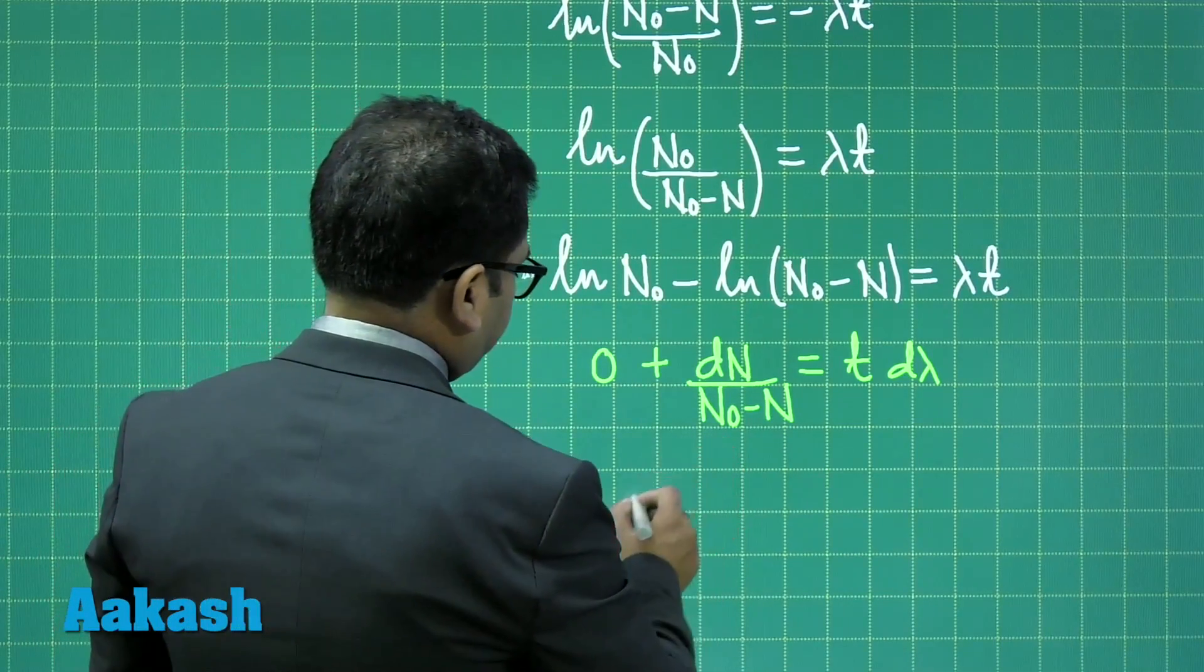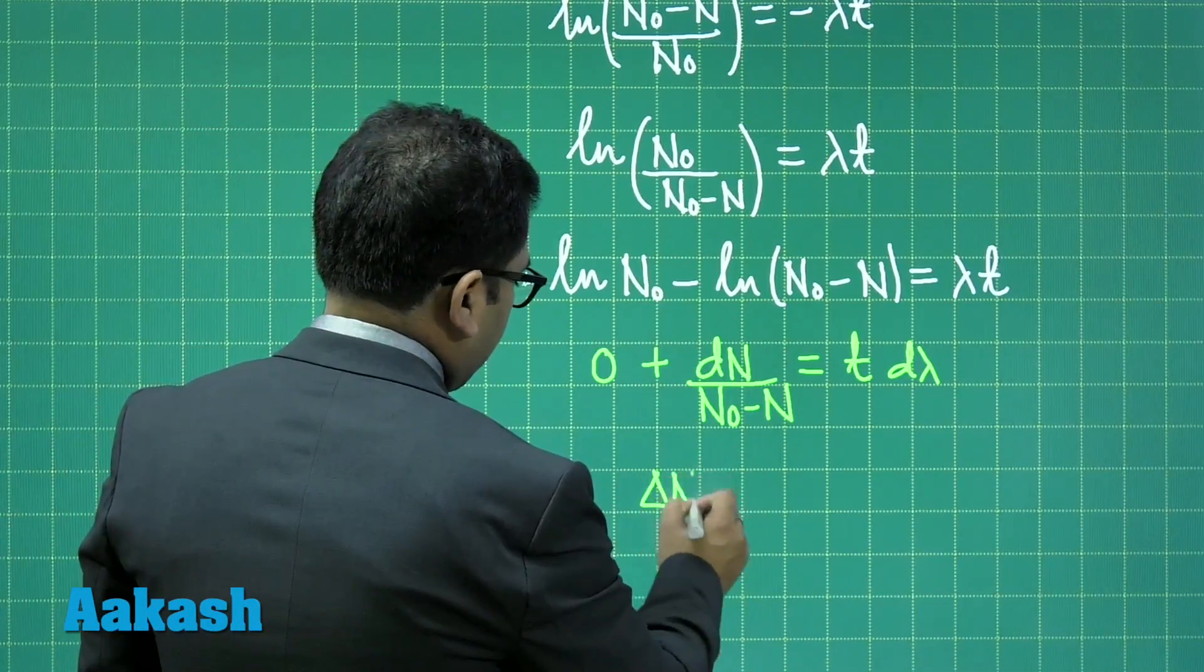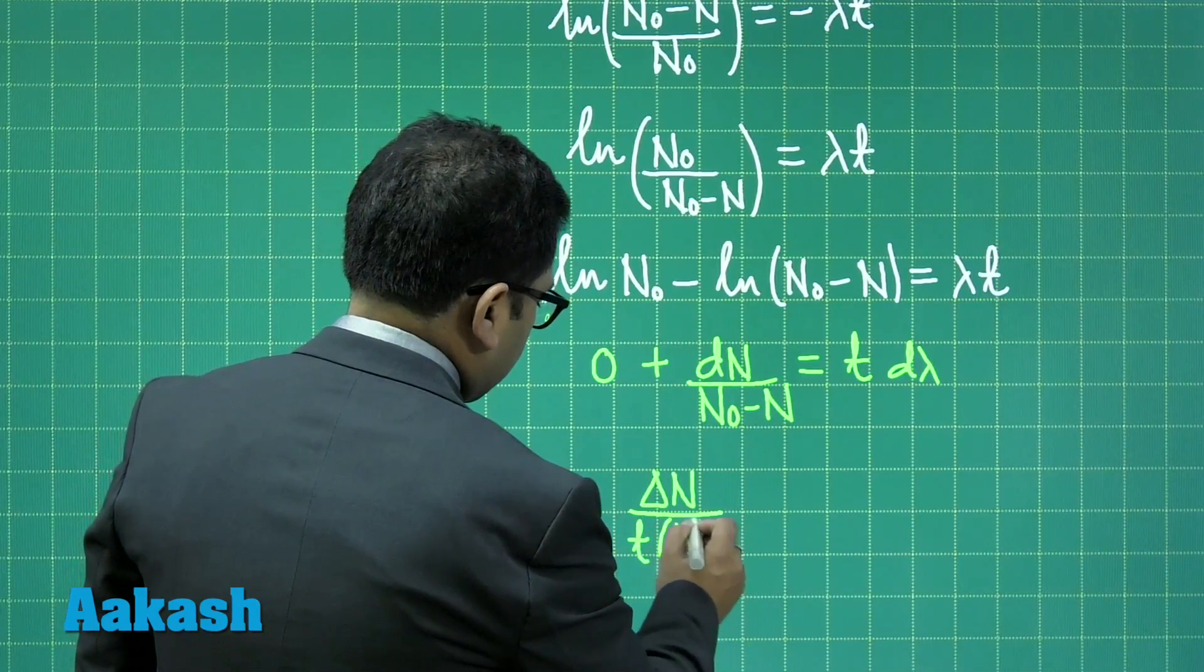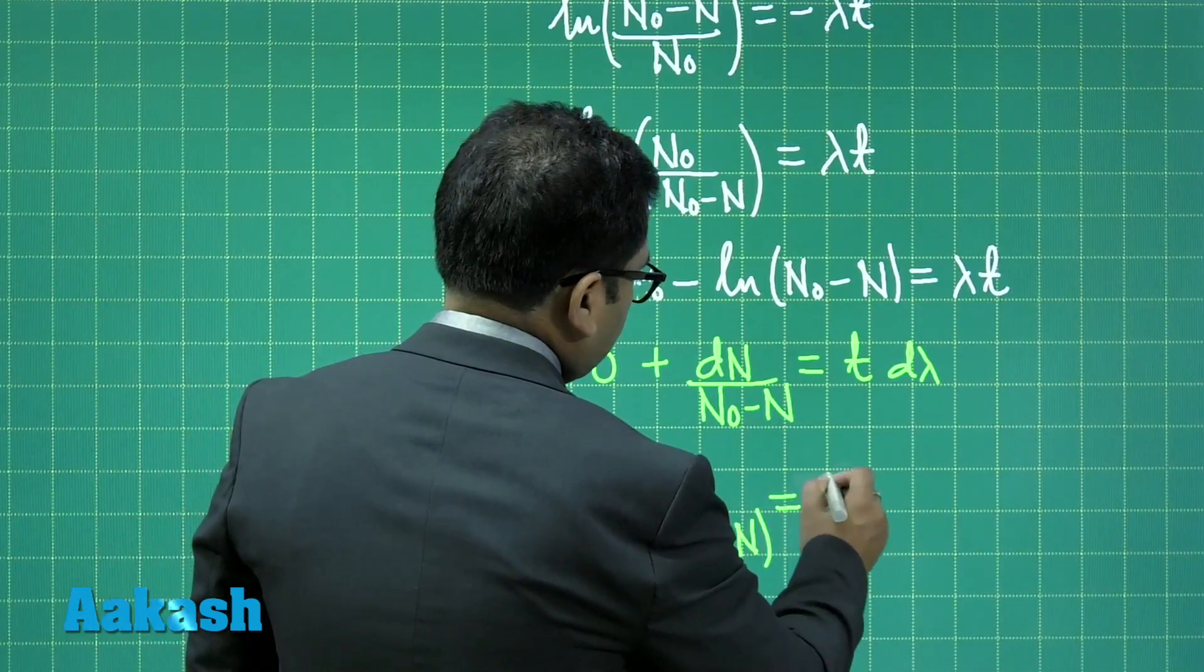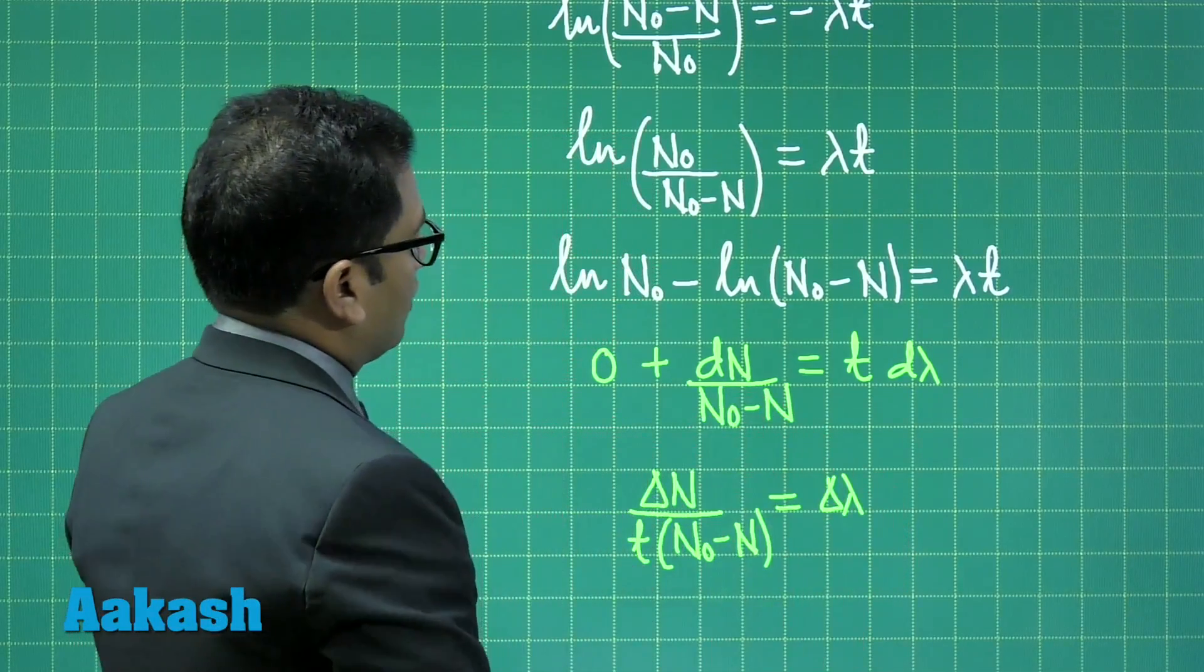So here comes delta N by t times N naught minus N equals to delta lambda. Now let's see the value.